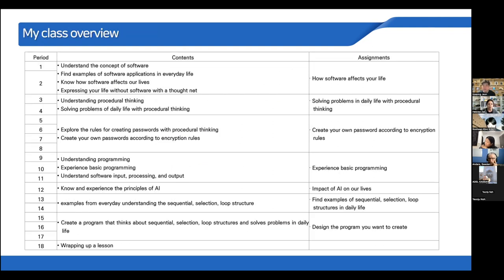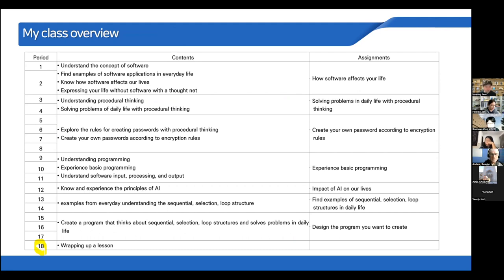Now I will show my classroom practical case for my primary school. This semester — the first semester — I teach 18 periods over 18 weeks, one hour per week. In those 18 weeks, I teach about what is software and find examples of software in our lives.